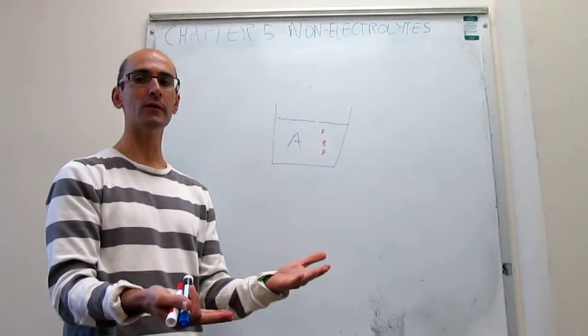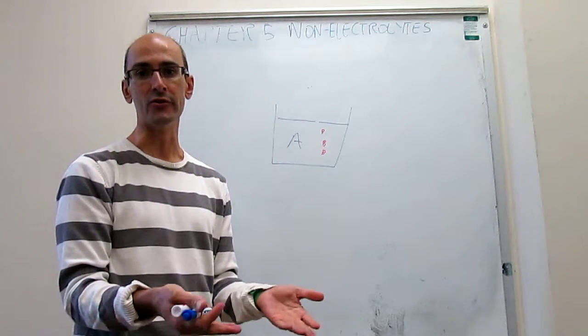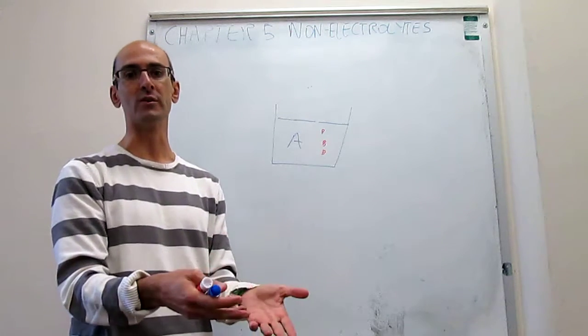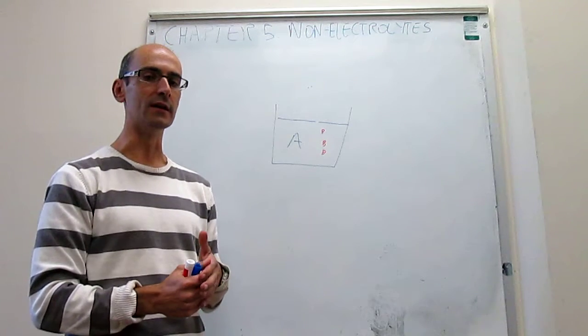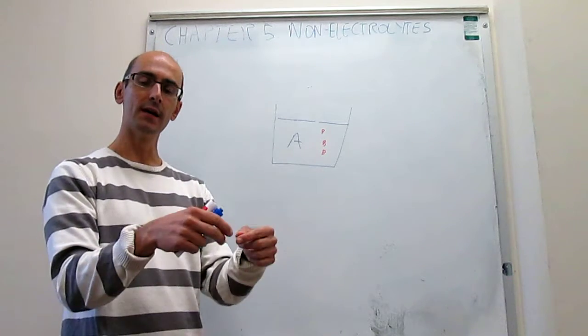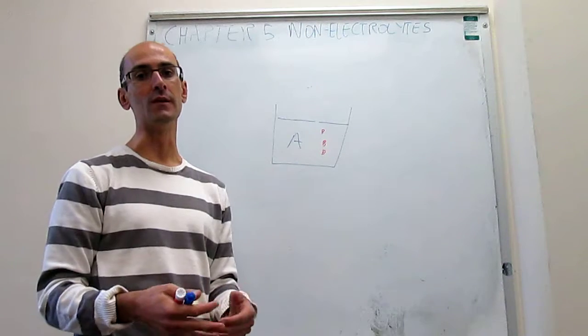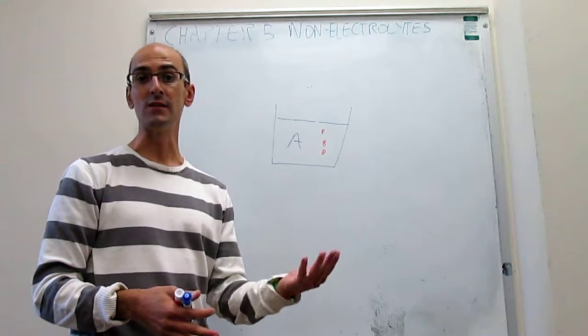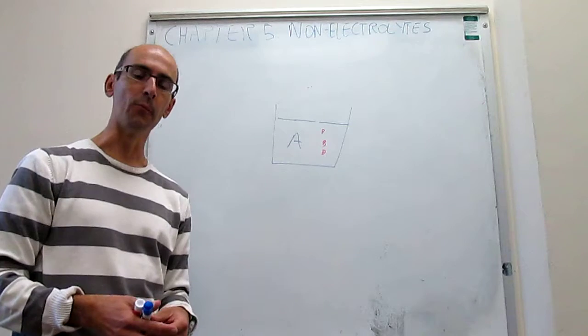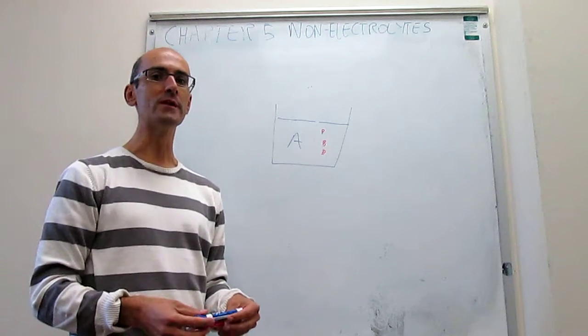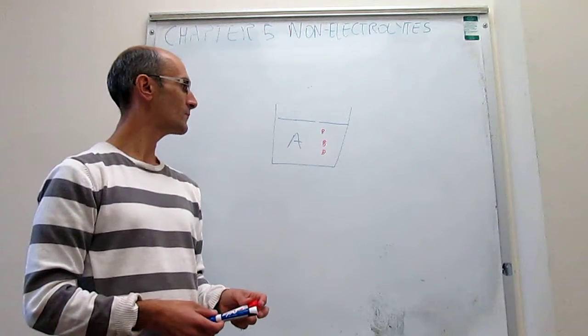But it also applies when mixing two liquids. For example, if you mix water and ethanol, even though ethanol is not a powder and you're not weighing grams to dissolve, there are two liquids. Which one is the solvent and solute is simply determined by which one is majority and which one is minority. The majority component is the solvent, the minority component is the solute.